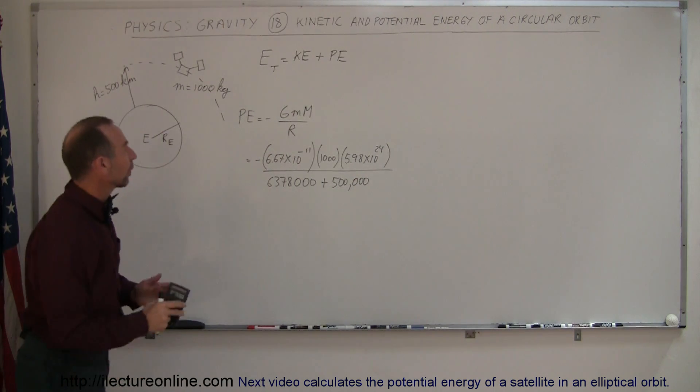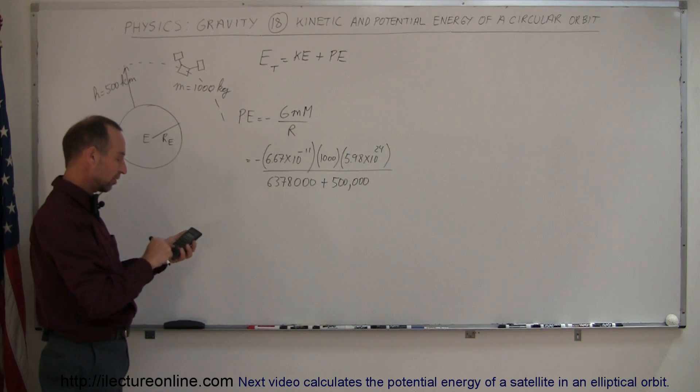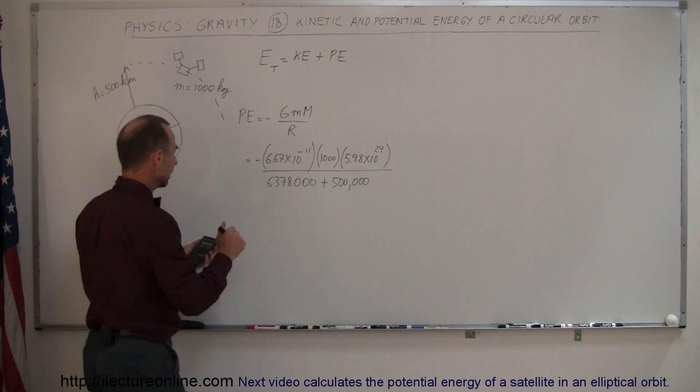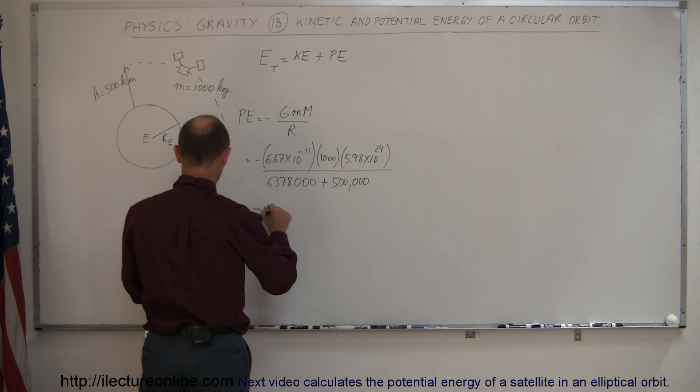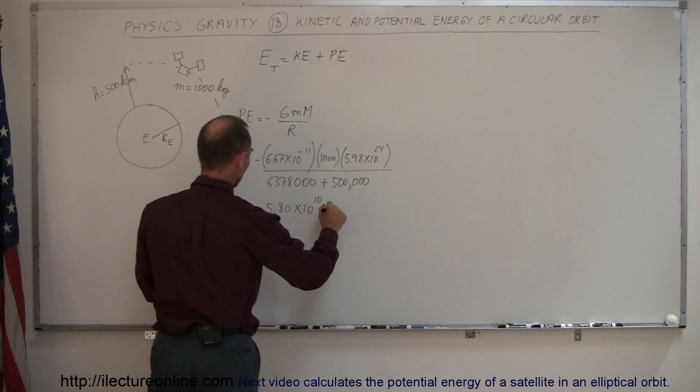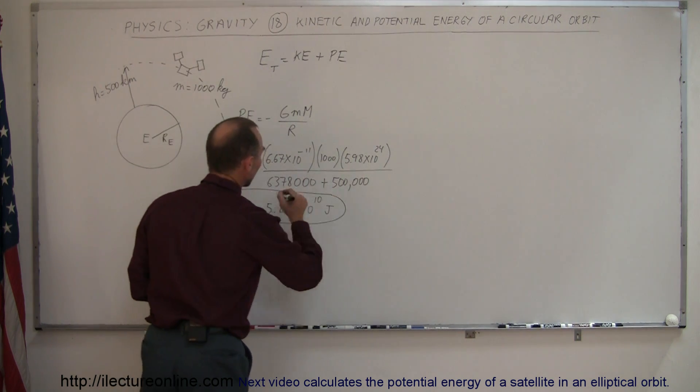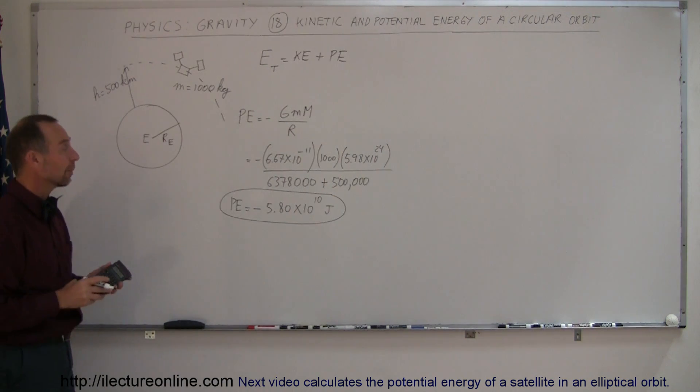So with a calculator we can figure out what the potential energy is, and notice it's going to be a negative quantity. 6.67 e to the minus 11 times 1,000 times 5.98 e to the 24th, divided by 6,878,000 equals minus 5.80 times 10 to the 10th joules. So that's the potential energy of the satellite when it's in orbit 500 kilometers above the earth.